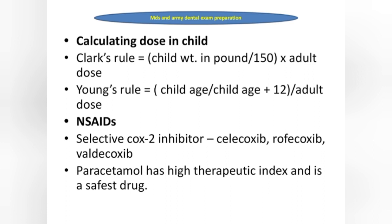To calculate dose in a child, we use two rules: Clark's rule and Young's rule. Clark's rule is related to child weight; Young's rule is related to child age. Clark's rule: (child weight in pounds / 150) × adult dose. Young's rule: (child age / (child age + 12)) × adult dose.